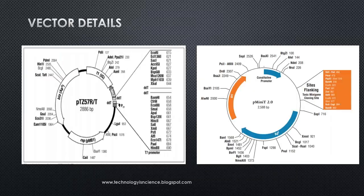These are some of the vectors generally used for TA cloning. The vector has selectable markers like ampicillin and the lacZ gene for blue-white screening, and there is a multiple cloning site. The T overhang in the vector is generated using terminal transferase enzyme, which is required to pair with the A overhang of the PCR product. These are two different vectors from cloning kits — one is from Thermo and the other is from NEB.